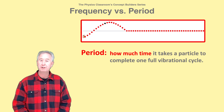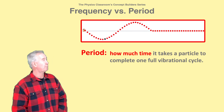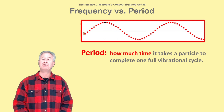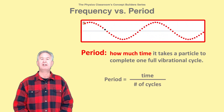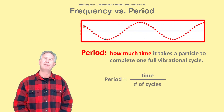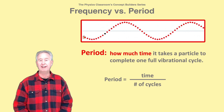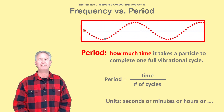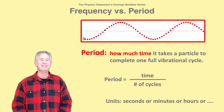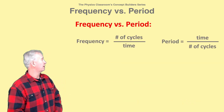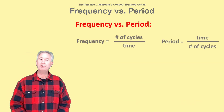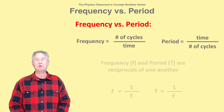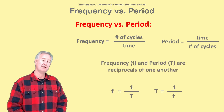Period refers to how much time it takes a particle to complete a full vibrational cycle. Period is the time per cycle, and is calculated by dividing the time by the number of cycles occurring during that time. It has units of time, like seconds, minutes, or even milliseconds. When comparing the equations of frequency and period, you notice that one is the inverse of the other — frequency and period are reciprocals of each other.